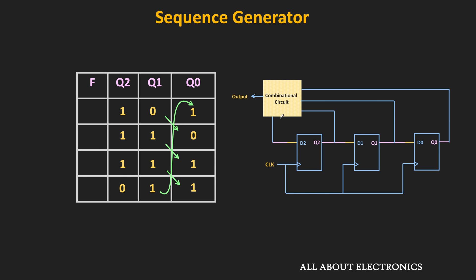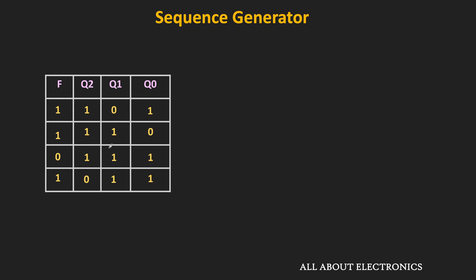The output of the combinational circuit is connected back to the D2 input. Let's say the output of the combinational circuit is equal to F. Whatever is the output F, the same will get transferred to Q2 at the next clock pulse. That means these 3 rows of column F should equal 110, so that in the next clock pulse the same gets transferred to Q2. Likewise, the last row of F should equal 1, so that it gets transferred to Q2 at the next clock pulse. In this way, we also obtain the column of output F. The outputs Q2, Q1, and Q0 are the inputs to the combinational circuit, while F is the output.